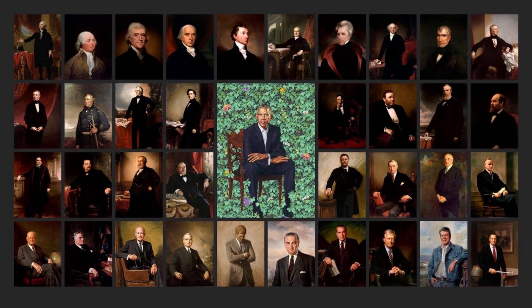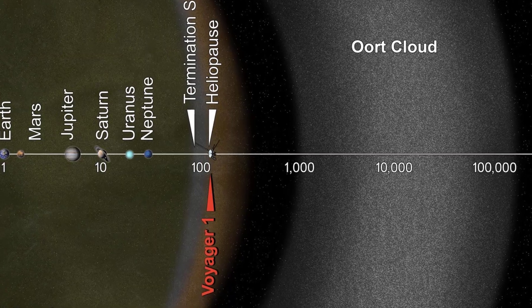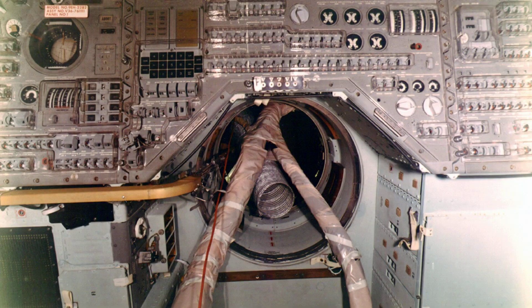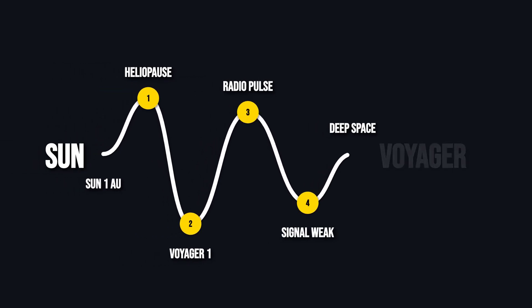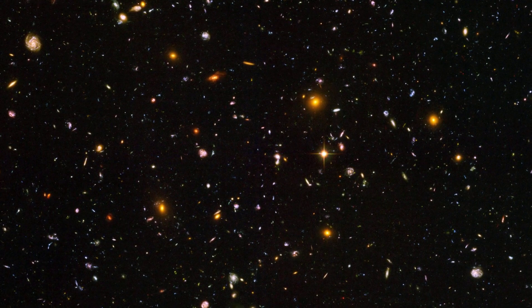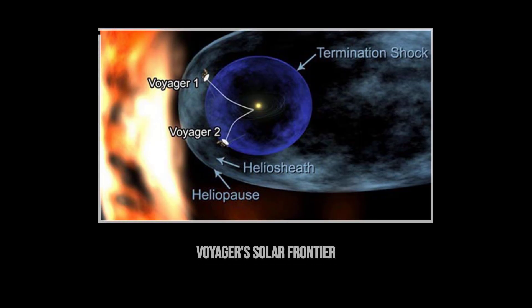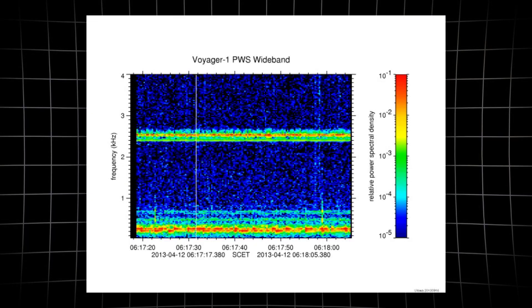Their journey has outlived precedents, outpaced predictions, and redefined the scale of what a single mission can achieve. Voyager is not just a machine, it is a message in motion, proof that a handful of tools built in the analog age can outlast the boundaries of their creators. Each faint transmission is a reminder that humanity's reach extends beyond the warmth of the Sun, into a realm where no living thing has ever traveled. The edge Voyager crossed is more than a line in space, it is a threshold for our species, a first step into the true ocean of the galaxy. And as long as the signal continues, the story of our journey outward is still being written.